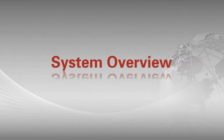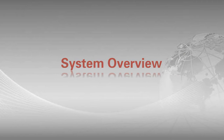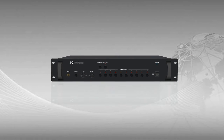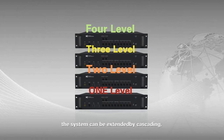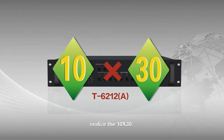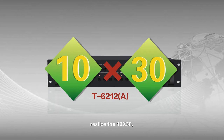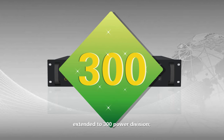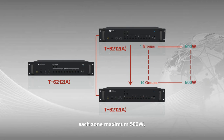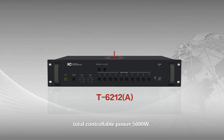System Overview. Built in 10 groups of power division, the system can be extendedly cascading. Realize 10 times 30, extended to 300 power divisions. Each zone maximum 500V, total controllable power 5000V.